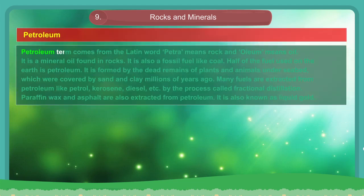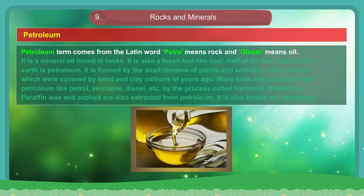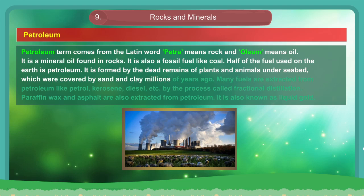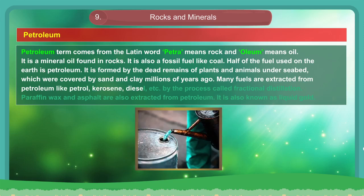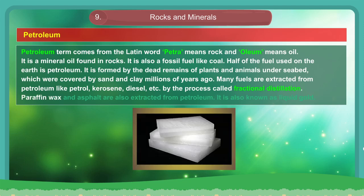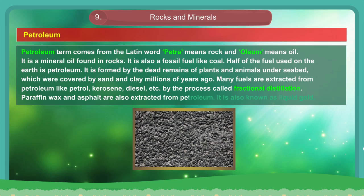Petroleum. The term petroleum comes from the Latin word petra, which means rock, and oleum, which means oil. It is a mineral oil found in rocks. It is also a fossil fuel like coal. Half of the fuel used on earth is petroleum. It is formed by the dead remains of plants and animals under the seabed, covered by sand and clay millions of years ago. Many fuels are extracted from petroleum — like petrol, kerosene, diesel, etc. — by the process called fractional distillation. Paraffin wax and asphalt are also extracted from petroleum. It is also known as liquid gold.